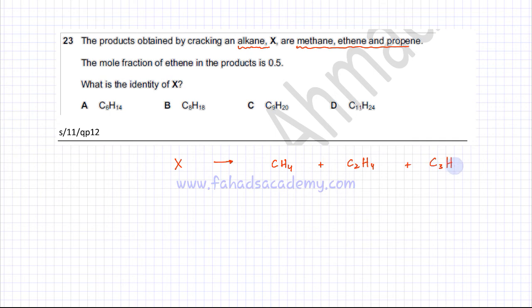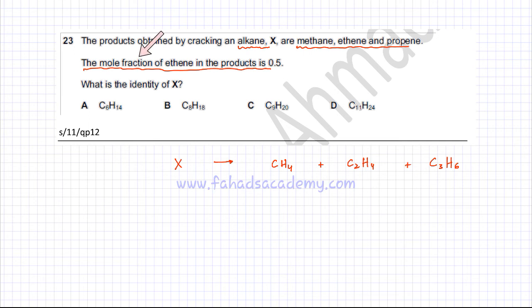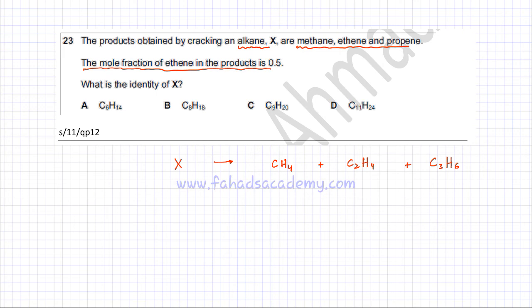The mole fraction of ethene is 0.5. What mole fraction means is that half of the products are going to be ethene. So if you're getting three products, let's try and balance this equation.